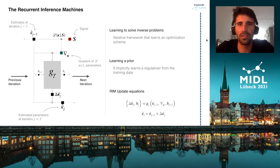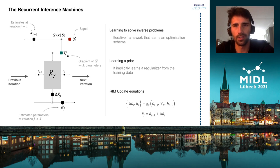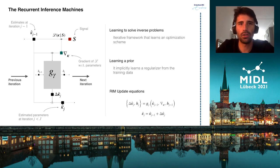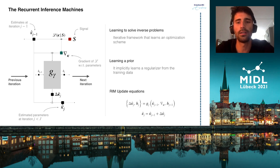Additionally, because the RIM is a hybrid framework — that is, it enforces data consistency — we expect it to also improve the estimation quality over feedforward networks that only learn the data distribution.